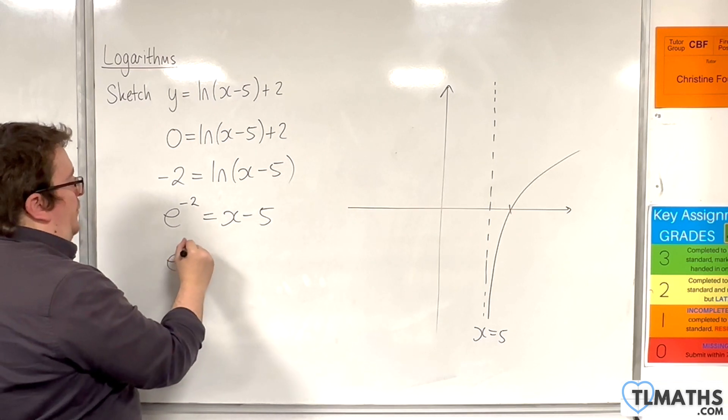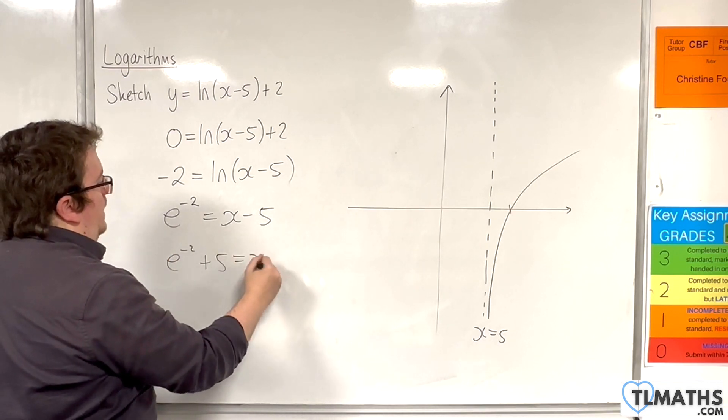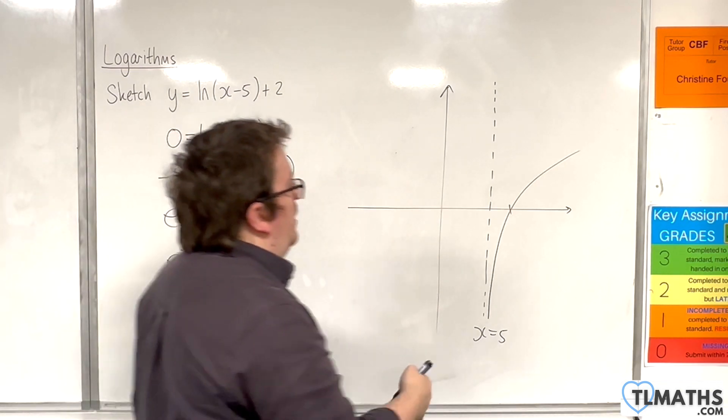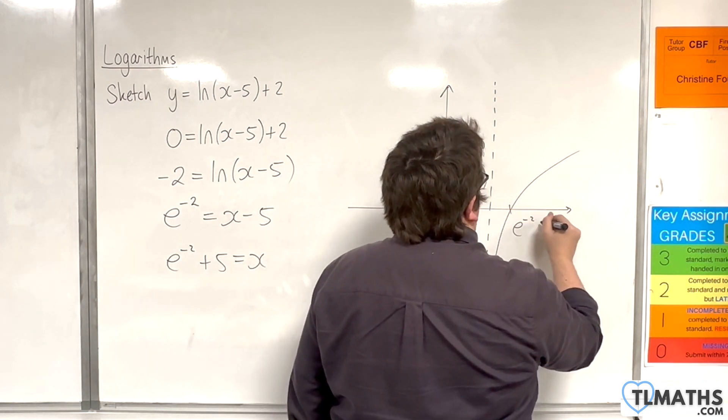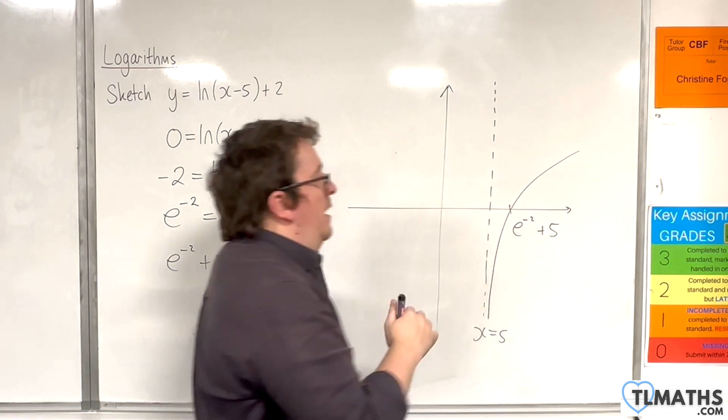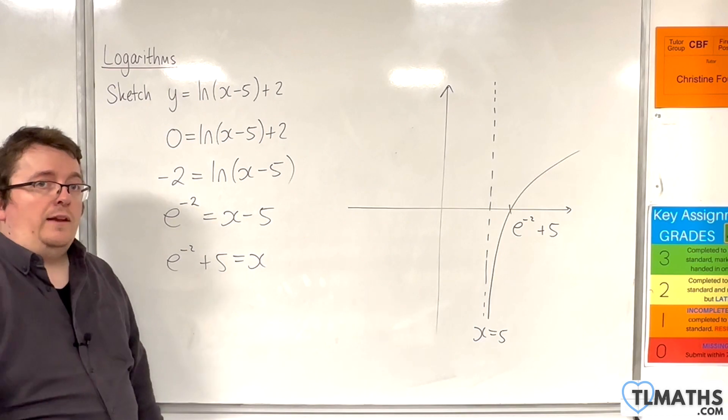And then add 5 to both sides. And so x will be e to the minus 2 plus 5, and that's the exact point at which the curve crosses the x-axis.